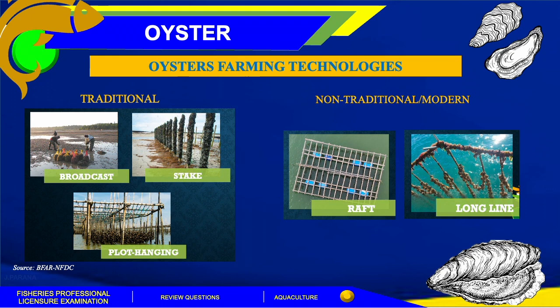When we talk about oyster farming technologies in our country, we have two methods: traditional and non-traditional or modern. Traditional methods include the broadcast, stake, and flat hanging methods. While non-traditional or modern technology includes the rough and long-line methods.